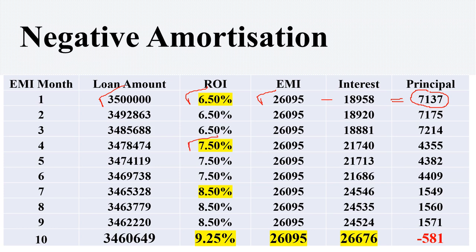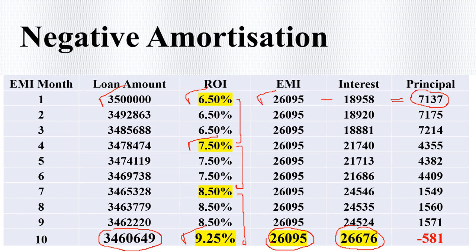Now, let us assume that after 4 months the rate of interest increased from 6.5% to 7.5%, then from the 7th month it went up to 8.5%, and from the 10th month it further rose to 9.25%. At the beginning of the 10th month, the principal outstanding was Rs. 34,60,695. Against an EMI of Rs. 26,095, the interest component itself is Rs. 26,676 — higher than the EMI. So rather than the EMI making payment towards principal, there is a short recovery of interest. The scenario under which there is nil or negative amount going towards principal is called negative amortization.